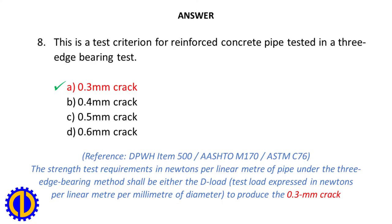Reference: DPWH Item 500, AASHTO M170, ASTM C76. The strength test requirements in newtons per linear meter of pipe under the three-edge bearing method shall be either the D-load test load expressed in newtons per linear meter per millimeter of diameter to produce the 0.3 mm crack.